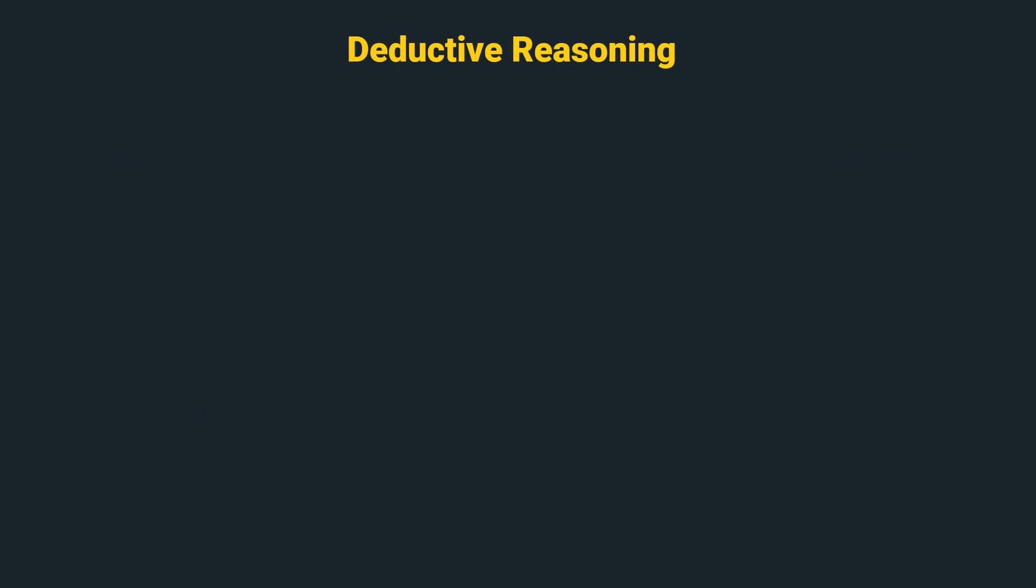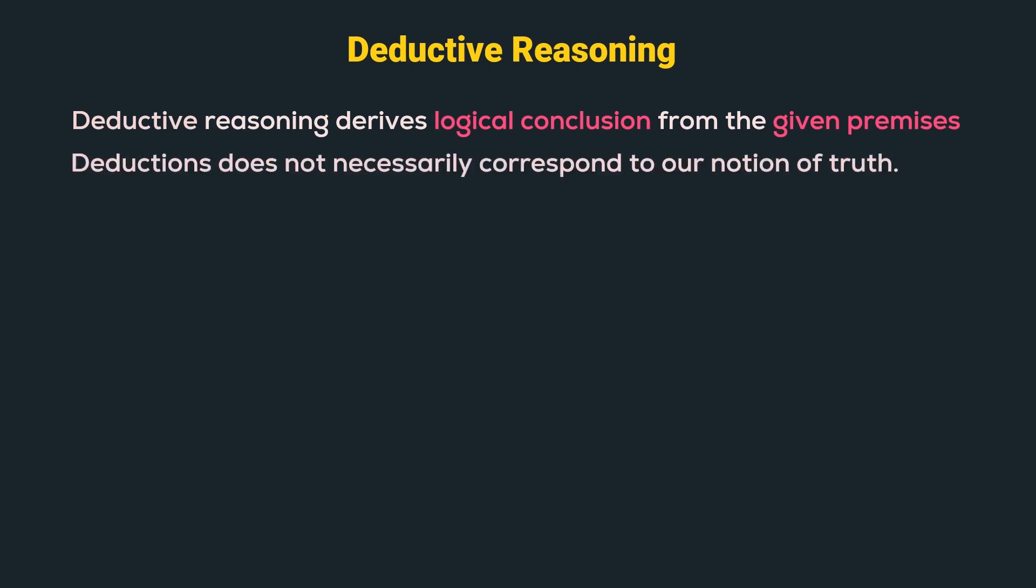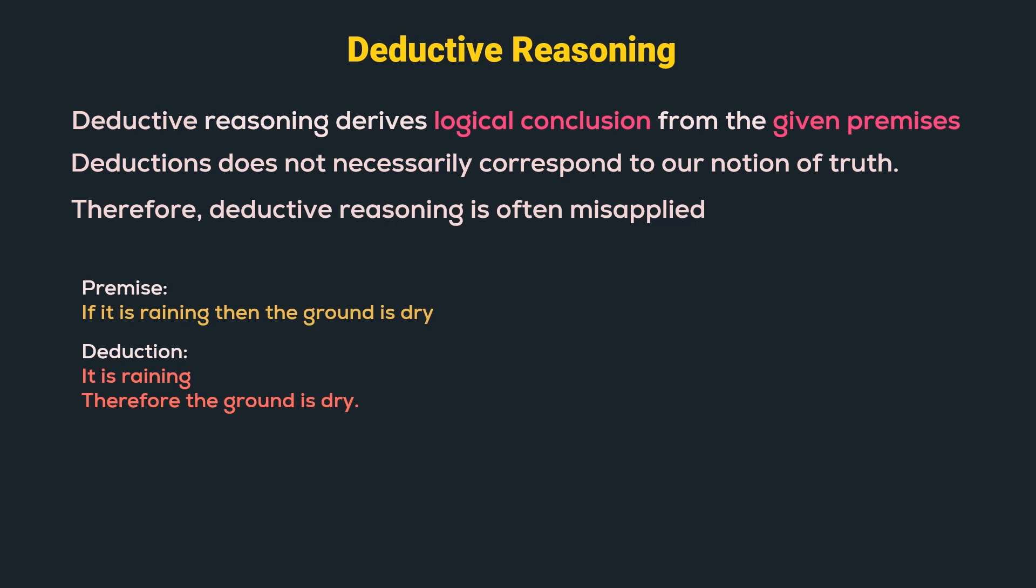Deductive Reasoning: Deductive reasoning derives logical conclusion from the given premises. Deductions does not necessarily correspond to our notion of truth. For example, given the premise, if it is raining, then the ground is dry. We have a deduction, it is raining, therefore the ground is dry. It is a perfectly valid deduction even though it contradicts our notion of truth. Therefore, deductive reasoning is often misapplied.